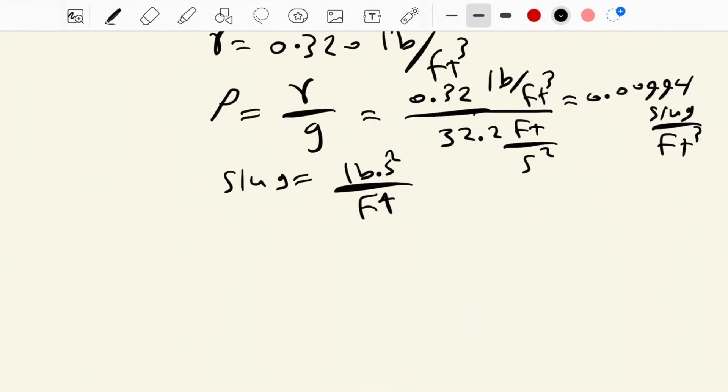Also, we have to find specific volume. Specific volume, V sub S, equals 1 over density. And it equals 1 over 0.00994, which equals 101 foot cube per slug.